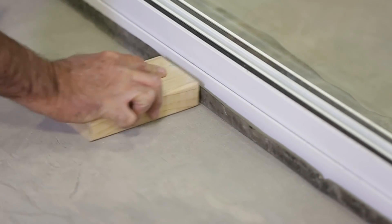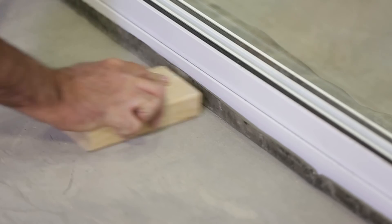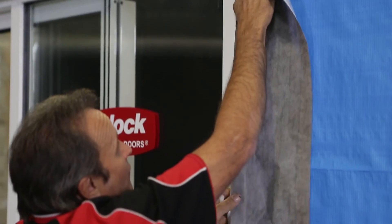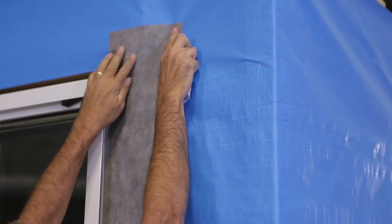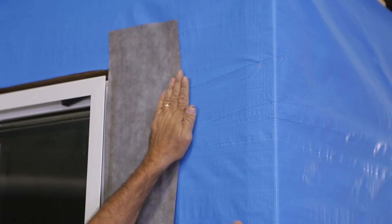To finish off, tamp the seal flashing into the seal for a nice neat finish. Fit the jam flashing to either side of the door starting 150 millimeters above and overlapping onto the seal flashing. The jam flashing should be at least 150 millimeters wide and sealed to the door frame.